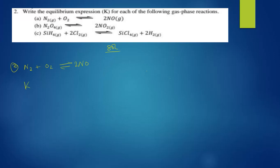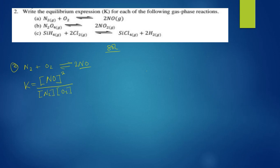For reaction (a), nitrogen reacting with oxygen in a reversible reaction to produce nitric oxide. You write the equilibrium expression K equals the concentration of the product, nitric oxide, raised to the power two — its stoichiometric coefficient — over the concentration of the reactants: nitrogen and oxygen. That's how you write the equilibrium expression for part (a).